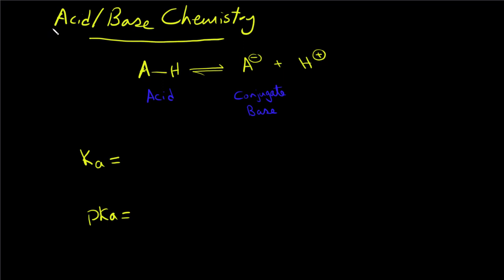In this video we will be going over acid-base chemistry, explaining the concepts in a very short video. Whenever you have an acid, it will normally dissociate to give you the conjugate base plus a proton.